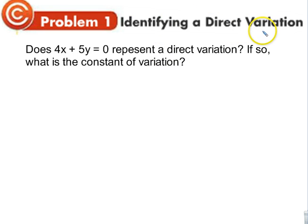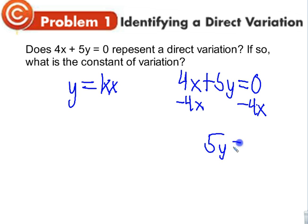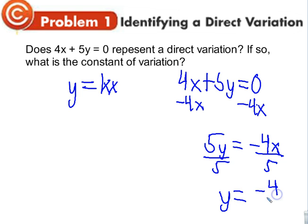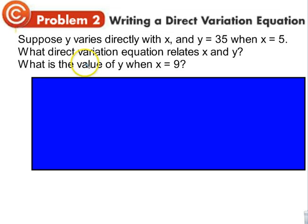To identify a direct variation, we put it in the form Y equals K times X — we get Y by itself. For example, subtract 4X to get 5Y equals negative 4X, then divide everything by 5. The equation becomes Y equals negative four-fifths X. Yes, this is a direct variation because it matches the form. The constant K is negative four-fifths — the number in front of X.